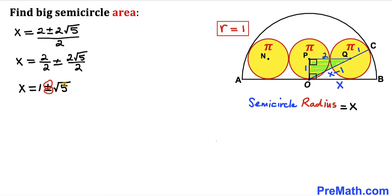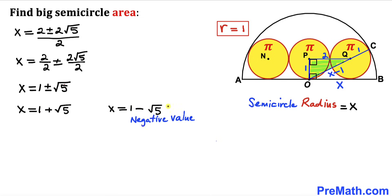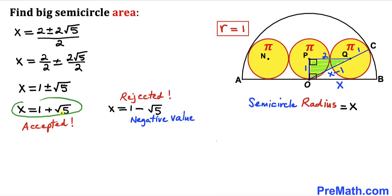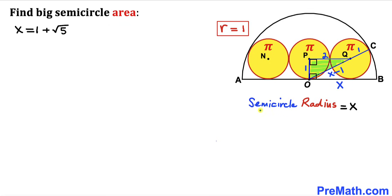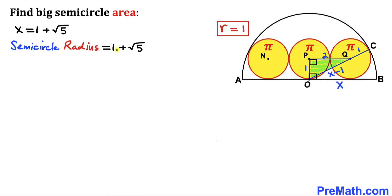Splitting into positive and negative cases: x = 1 + √5 or x = 1 − √5. Since 1 − √5 gives a negative value and x is a length, we reject it. Therefore we accept x = 1 + √5, and the semicircle radius is 1 + √5 centimeters.